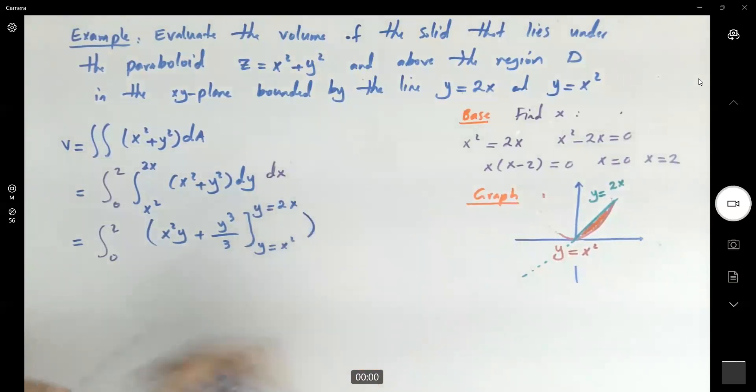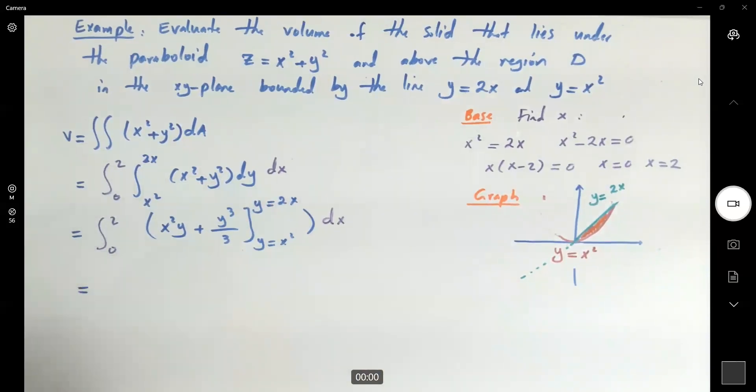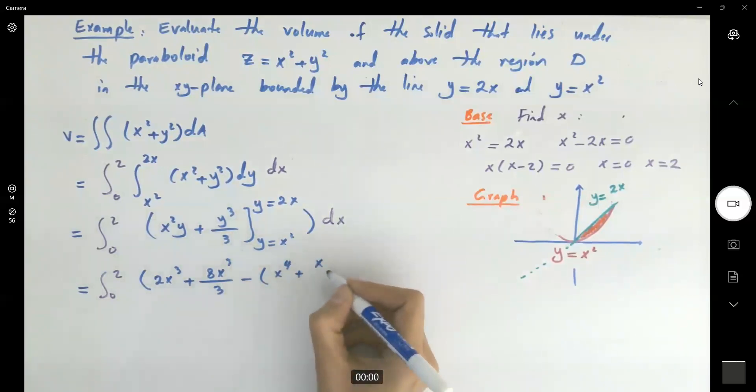Then, after simplifying, take the integral with respect to x. Here we get integral 0 to 2. Let's substitute these. We have 2x cubed plus 8x cubed divided by 3 minus, now substitute x squared, we get x to the 4 plus x squared plus x to the 6 divided by 3, and then take the integral with respect to x.